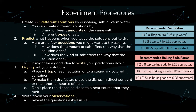Experiment procedures. The first step is to create two to three different solutions by dissolving salt into warm water. You can create different solutions by dissolving different amounts of salt or different types of salt. On the right you can see some recommended salt ratios, and you can predict what happens when you leave the solutions out to dry. Questions to consider: how does the amount of salt affect the way the solution dries, and how does the kind of salt affect the way it dries? It's a good idea to write your predictions down so you can compare them to your observations later.